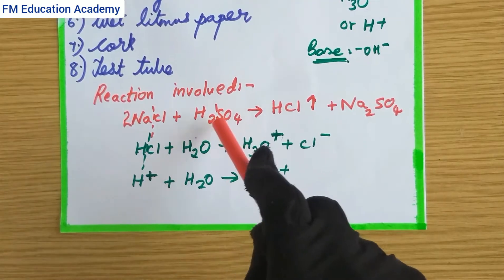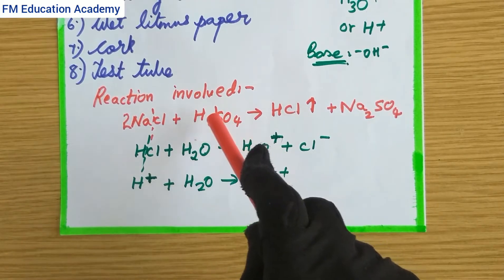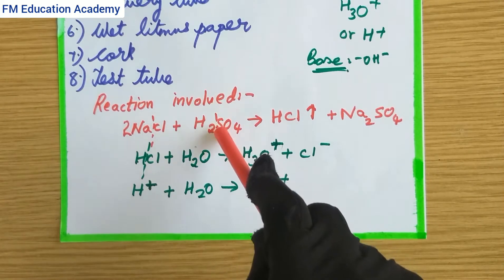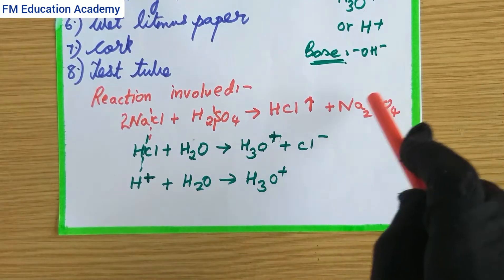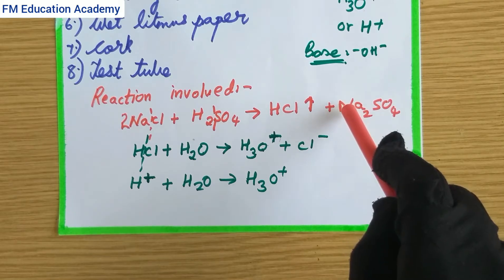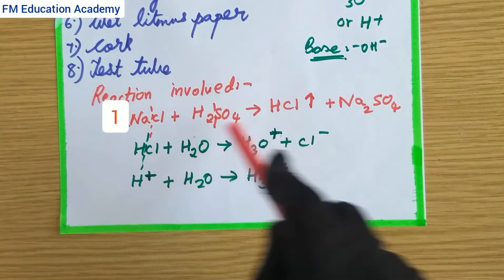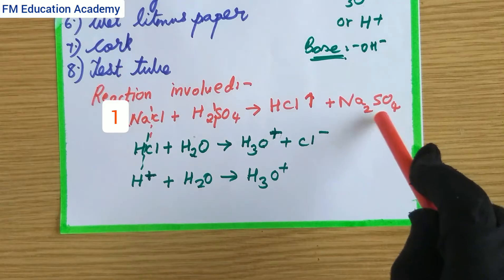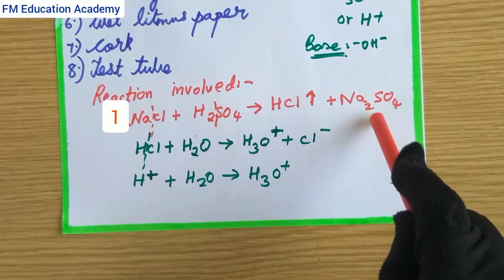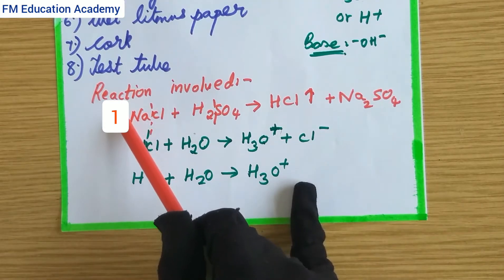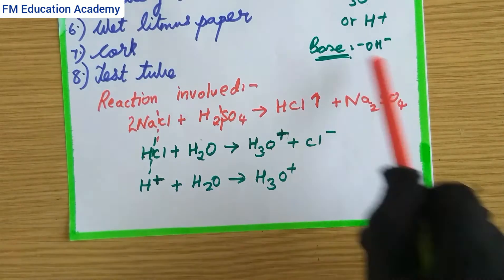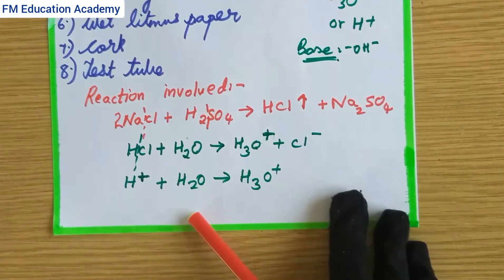The reaction that takes place: sodium chloride (NaCl) reacts with sulfuric acid (H2SO4). Hydrogen combines with chlorine to form hydrochloric acid (HCl), which is released as a gas, while sodium combines with sulfate (SO4) to form sodium sulfate (Na2SO4). The balanced equation requires 2 NaCl, since there are two sodium atoms on the right-hand side.